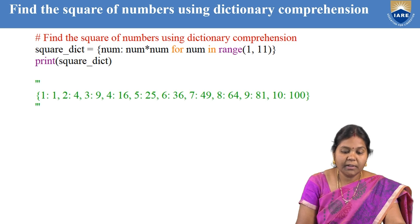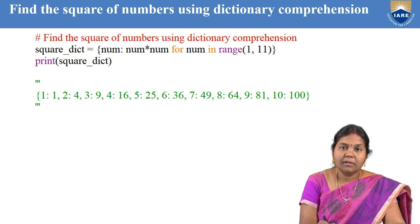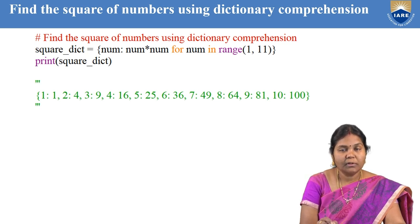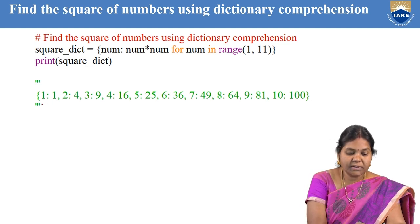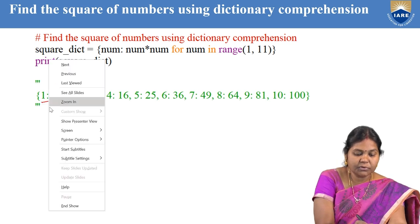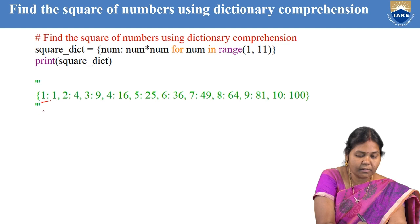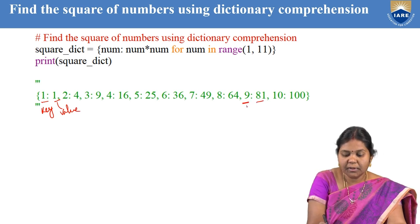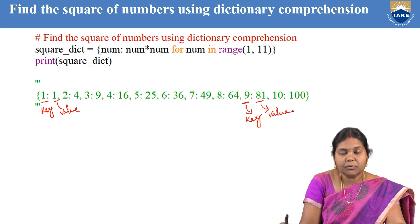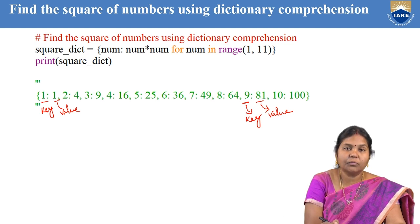Suppose I want to find out the square of numbers using Dictionary Comprehension. I want to find the numbers from 1 to 10 and their squares. I have to store the numbers as the key and the value as their squares. If you observe the output you can see 1 colon 1, meaning 1 is the key and its square is its value. And 9 colon 81 means 9 is the key and its square is its value. The output is in dictionary format with numbers in the range 1 to 10 and their squares as values.